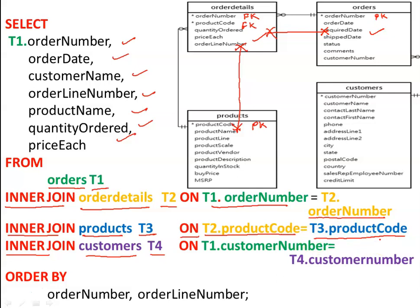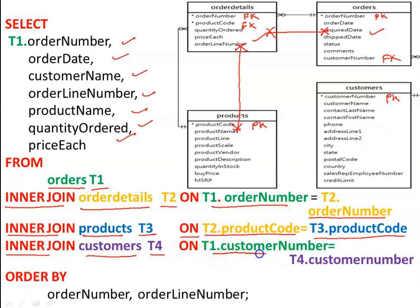We have now joined three tables, and finally we perform a join with the customers table. The customers table will be joined with the orders table. The attribute linking these two tables is the customer number — the primary key from the customers relation and the foreign key from the orders relation. The condition is T1.customer_number = T4.customer_number. Finally, for the results to appear in sorted order, we order by order number and order line number.